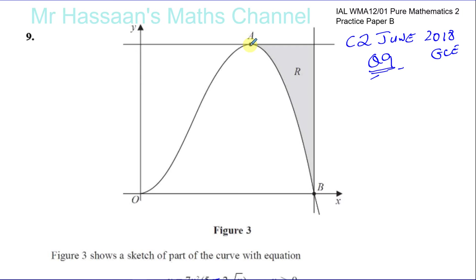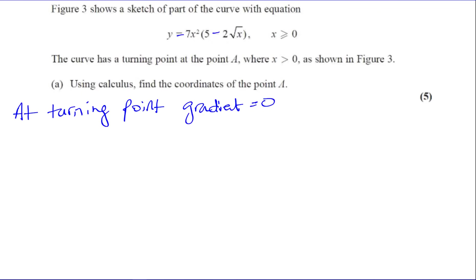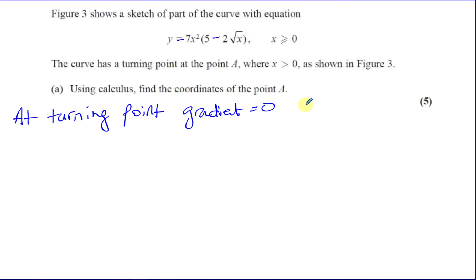This is where the curve turns — this line has a gradient of zero. So the tangent of the curve there will be zero. It's going increasing, increasing, becomes zero, then becomes decreasing — the gradient becomes negative. That's where the gradient is zero, so dy/dx for this function has to be zero at A, the turning point.